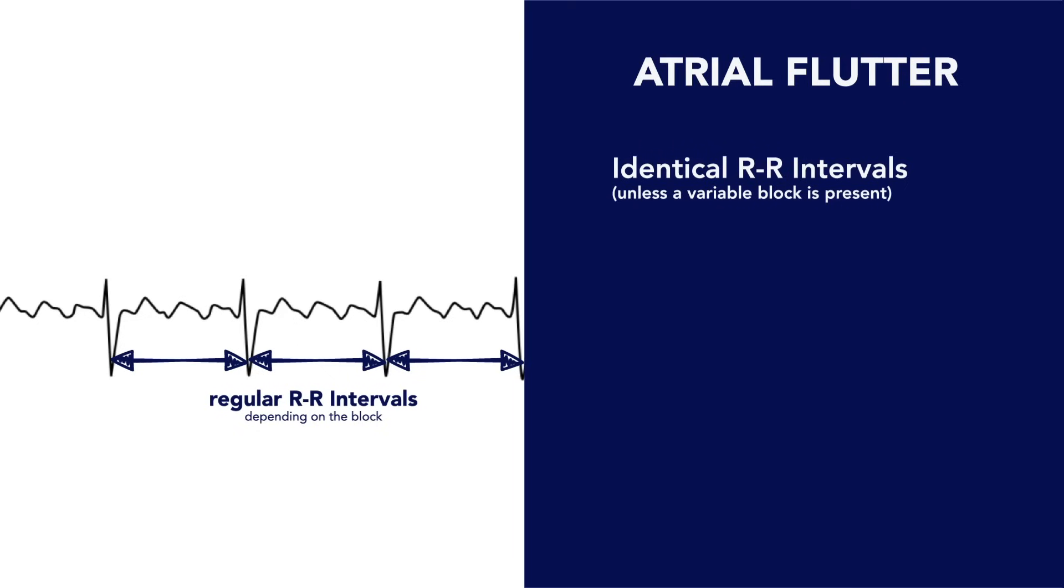This is in contrast to atrial fibrillation, which is always irregularly irregular. You won't see P waves, but instead flutter waves.